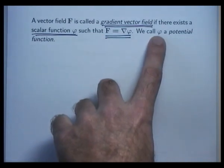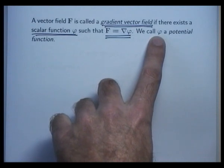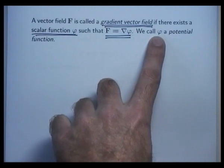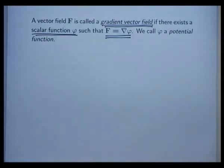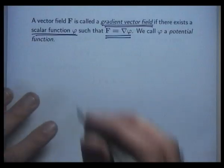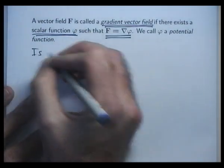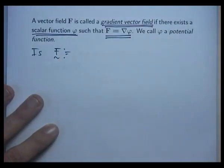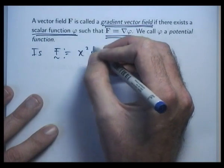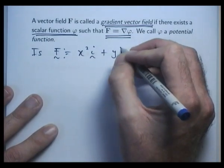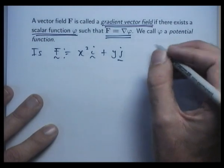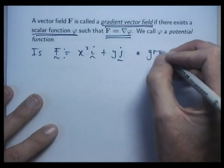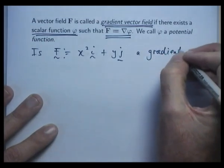And this phi is called a potential function, or just a potential for short. So let's investigate this a little bit further. Let's define F equals x squared i plus yj. So is this vector field a gradient field?